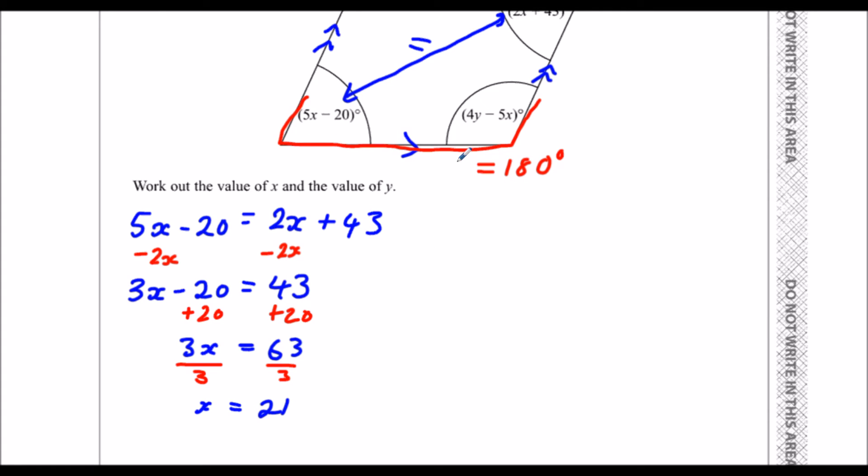Now I'm going to work out, I'm going to use these co-interior angles now. So we've got 5x minus 20, add 4y minus 5x is equal to 180.